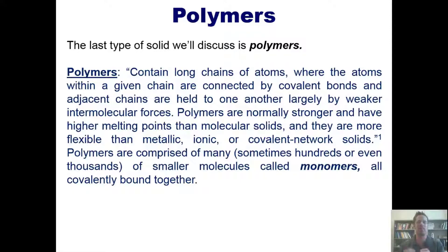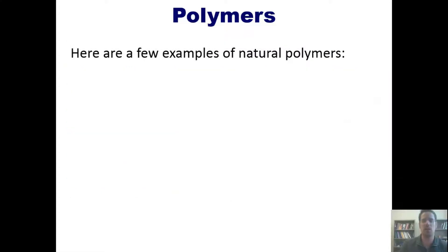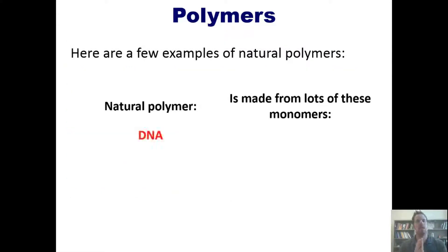Polymers are comprised of many, sometimes hundreds or even thousands of smaller molecules called monomers, all covalently bound together. Here are a few examples of some natural polymers. For example, DNA, the natural polymer that contains all of the molecules necessary to code for all of our physical traits, is made up of many small building blocks or monomers that are called nucleic acids.